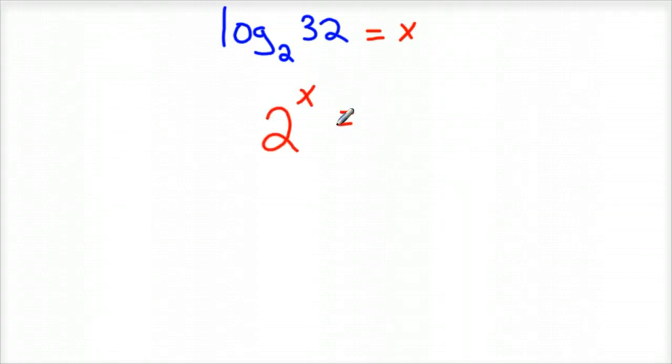2 to the X equals 32. Now we just need to figure out what value of X, 2 to what power, gives you 32. Well, 2 times 2 is 4, times 2 is 8, times 2 is 16, times 2 is 32.